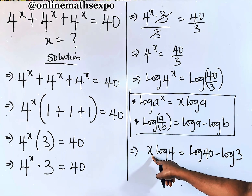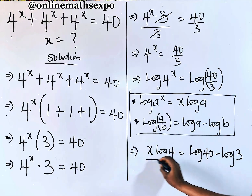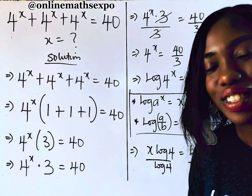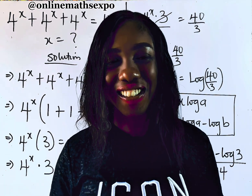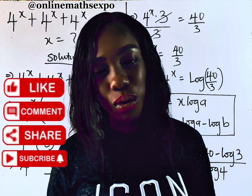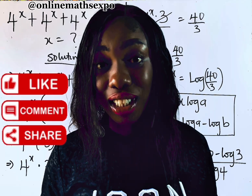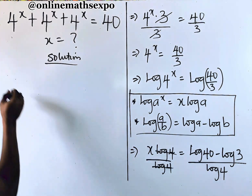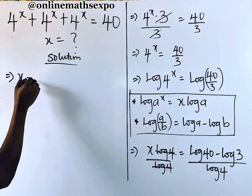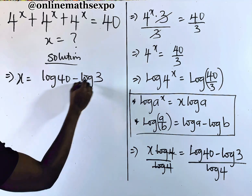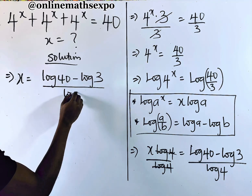Now to get our x, divide both sides by log of 4. Remember that these two log 4 terms cancel. So we have x is equal to log of 40 minus log of 3, all divided by log of 4.